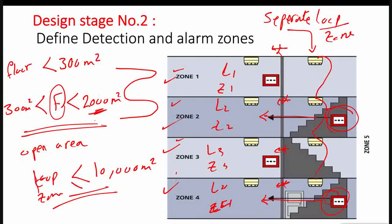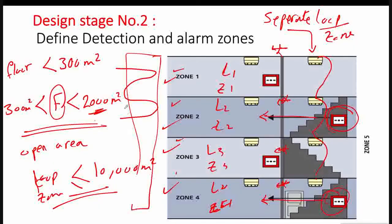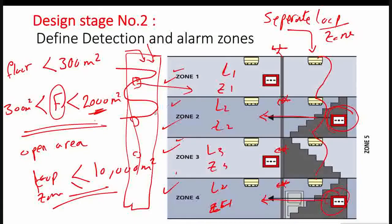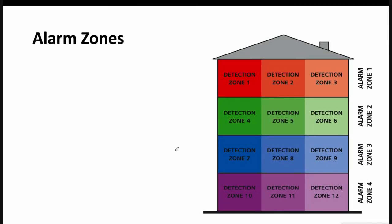Each floor should have its own zone, and all stairs should be on one loop. If there is another staircase, assign a separate zone or loop to it as well. All manual call points on that staircase shall also be connected to the floor zone.